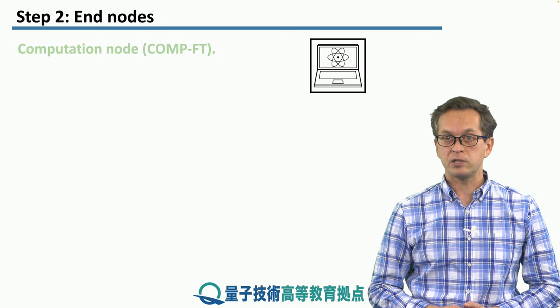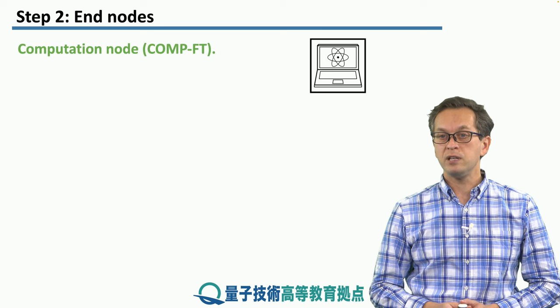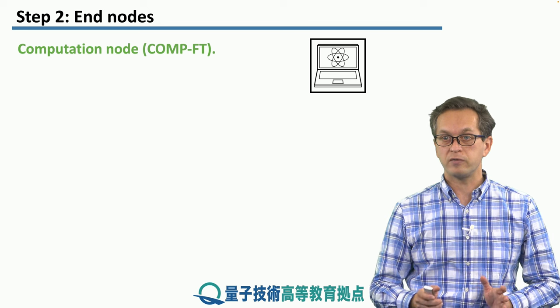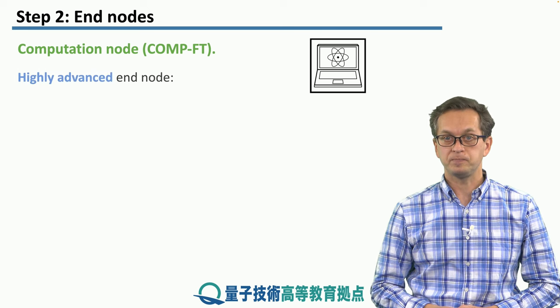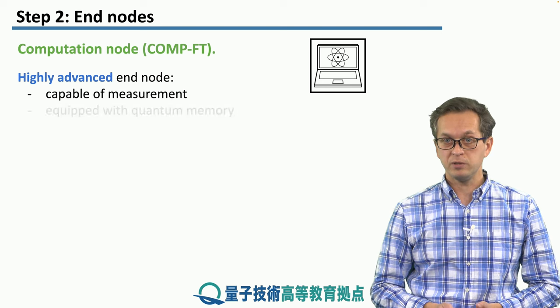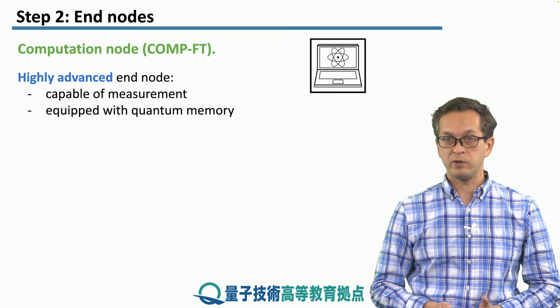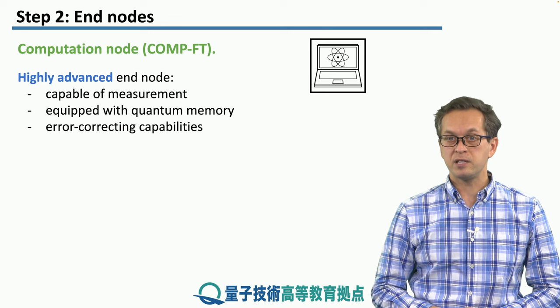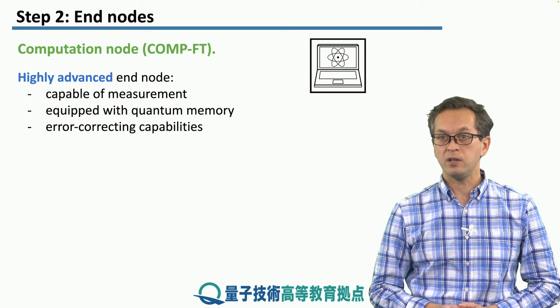Now let's move on to the second computational node, the CompFT, where FT stands for fault-tolerant. So this will be the first fault-tolerant computational node. This one is quite highly advanced. It's capable of measurement. It's equipped with quantum memories. It has error-correcting capabilities. This is the big difference between CompFT and CompNISC.